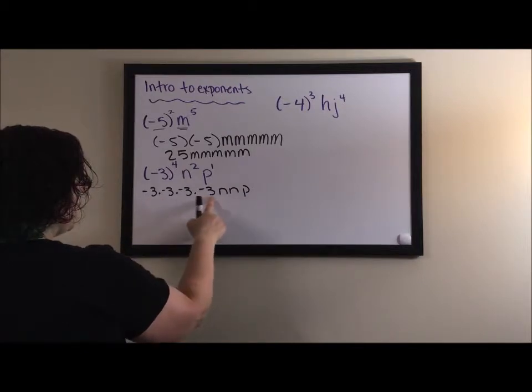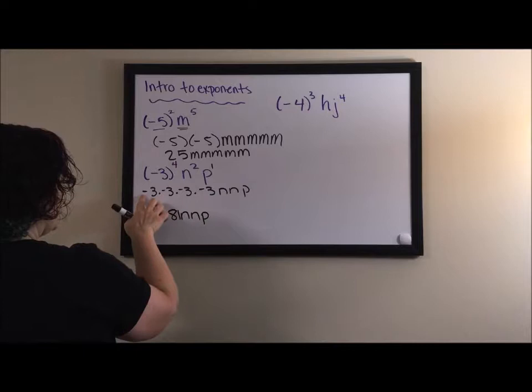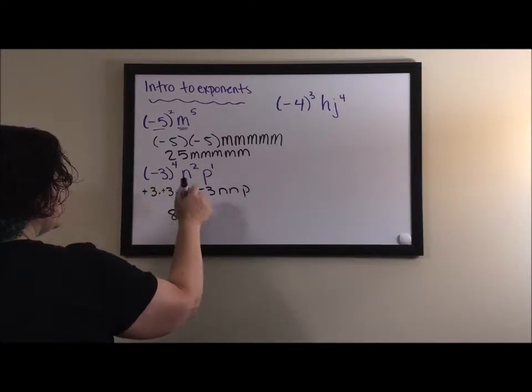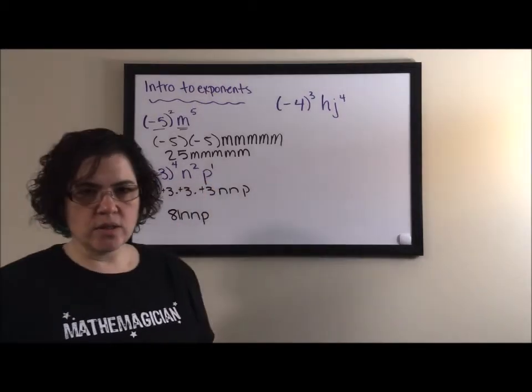If I wanted to multiply this out, three times three times three times three is eighty-one. And a negative times a negative is positive, so those two cancel out. And a negative times a negative is positive, so those two cancel out. So this ends up being the final answer.